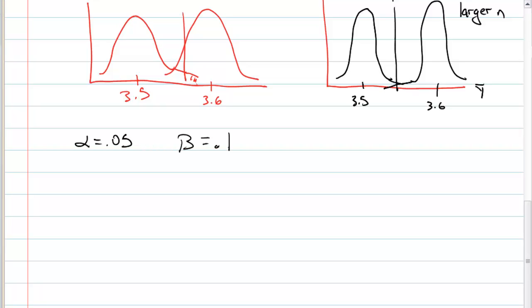If you remember, the way we calculated k was we looked at the probability that y bar was greater than k given mu was equal to 3.5. And then we calculated beta as the probability that we were less than or equal to k given that mu was 3.6. That's a review.